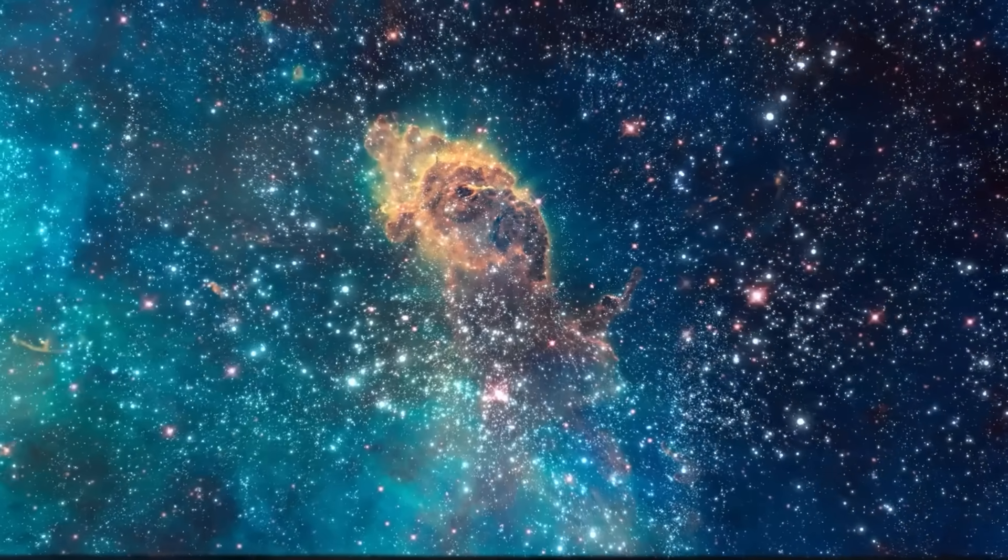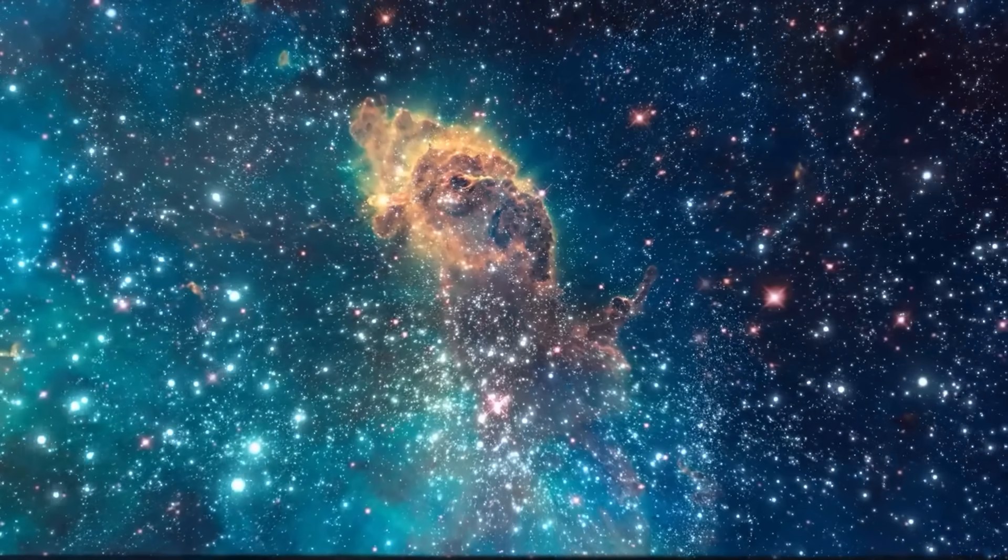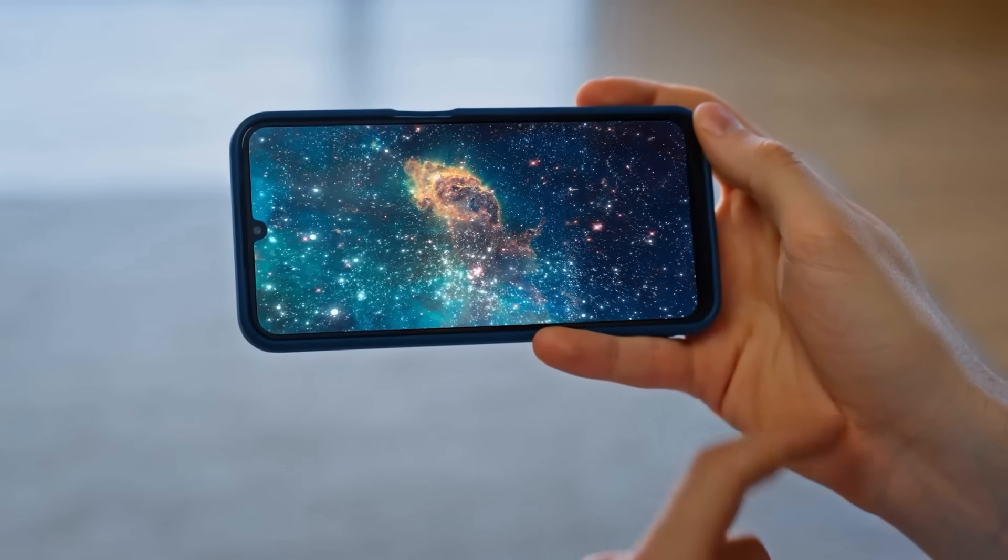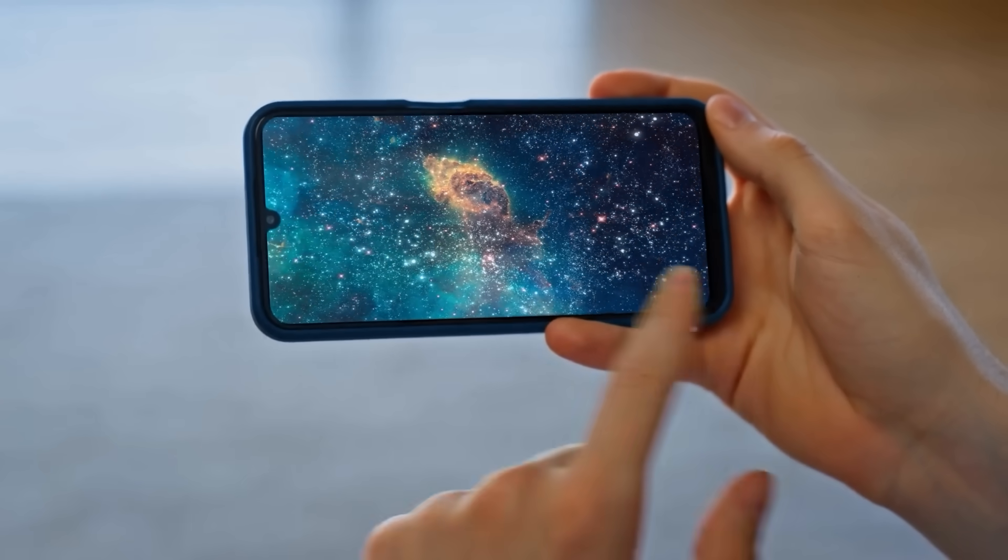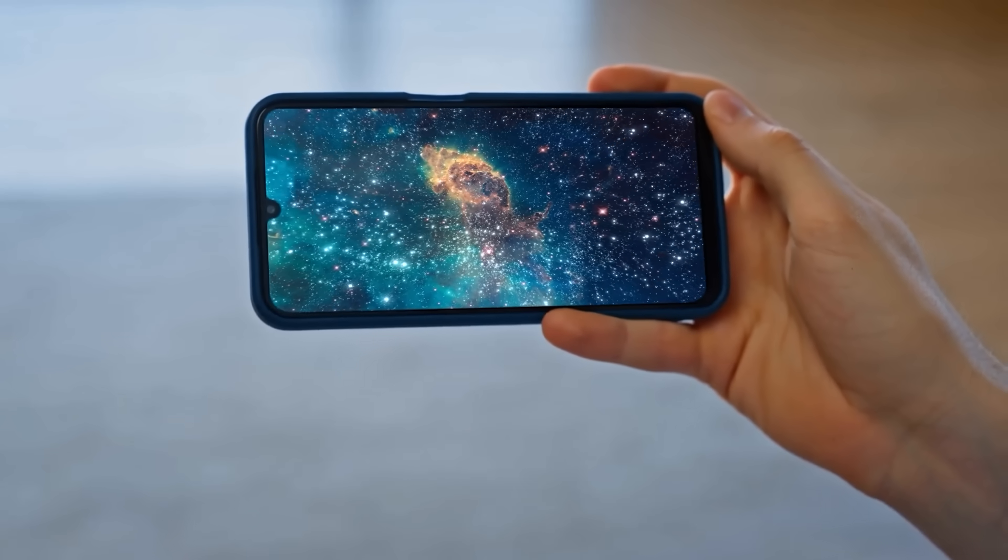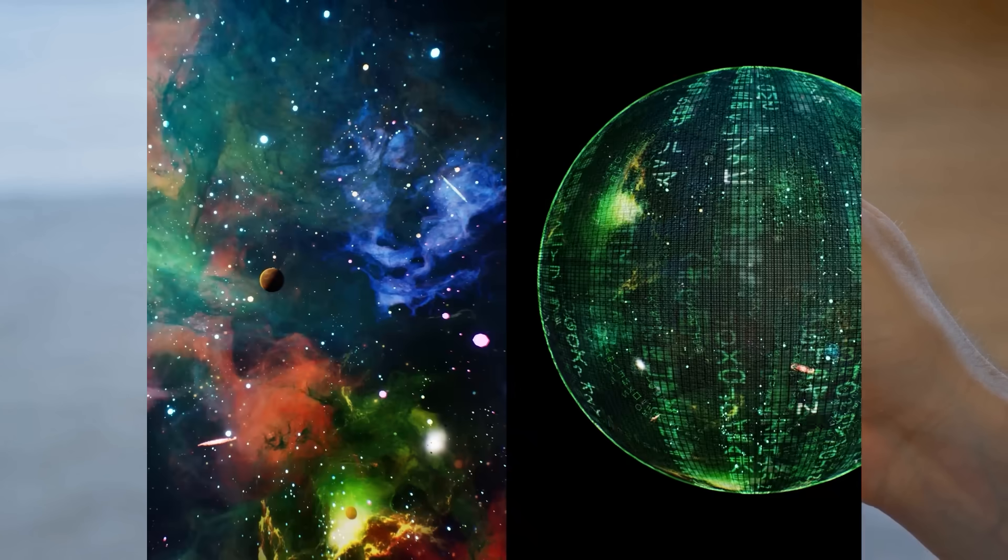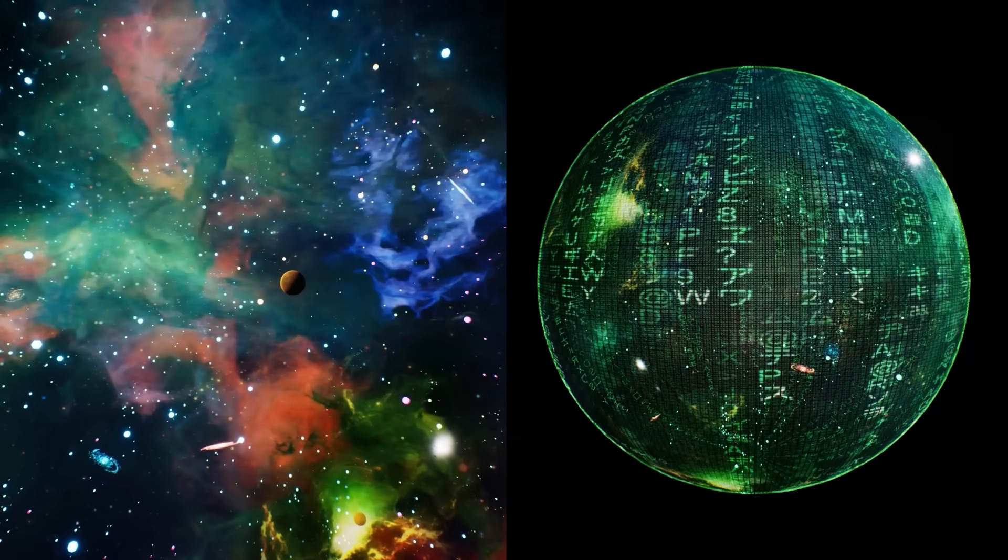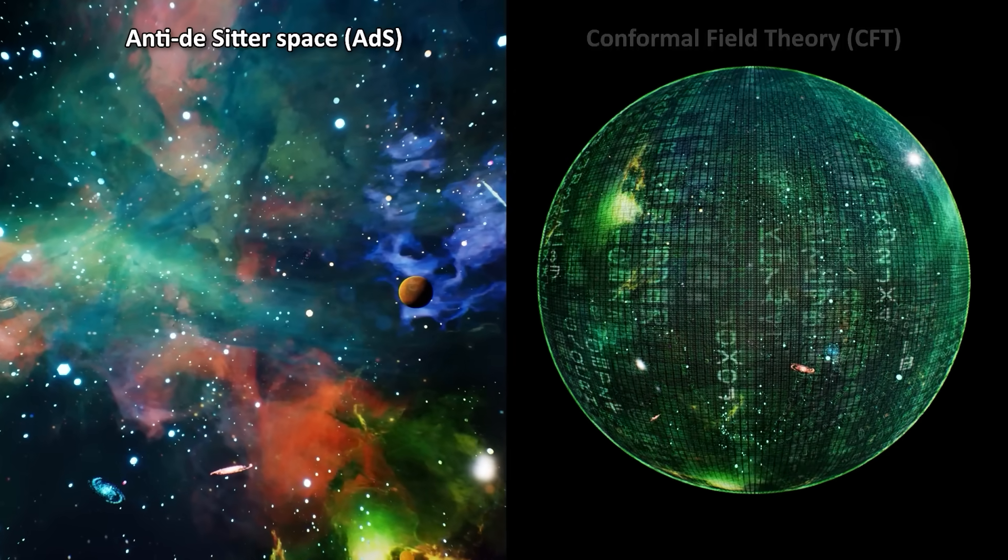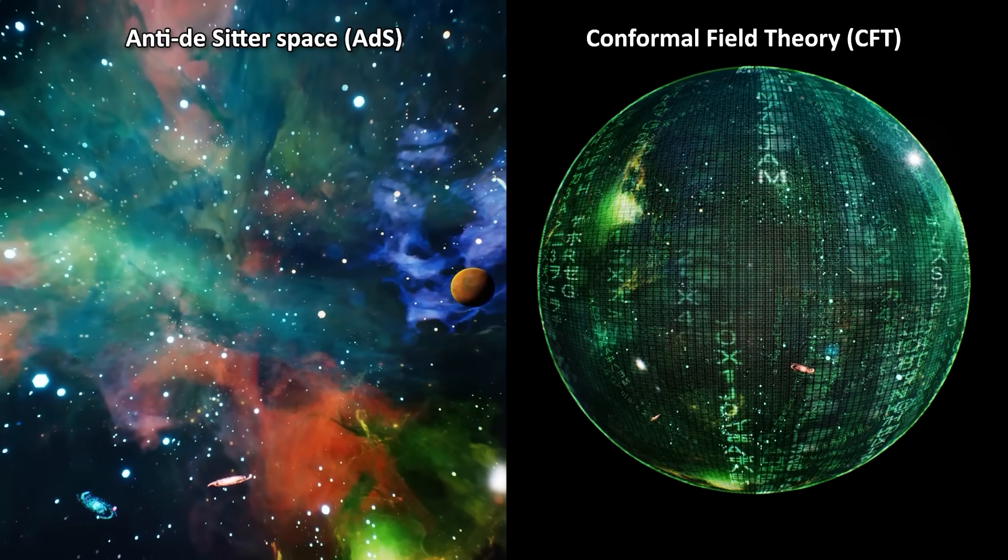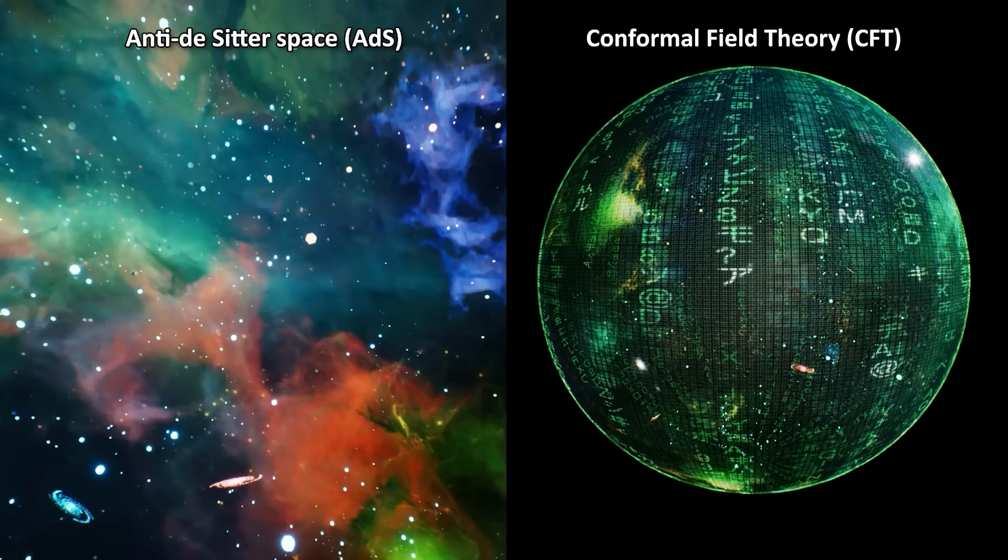The idea that our three-dimensional universe can be perfectly modeled by a two-dimensional surface might sound like science fiction, but it's a real scientific hypothesis proposed by physicists to understand how the universe might work at a deep level. Here's how this cosmic duality works. On one side is a place called ADS, or anti-de-sitter space, and on the other is something known as CFT, or conformal field theory. These are technical terms which may be confusing. I'll simplify by explaining what they mean.